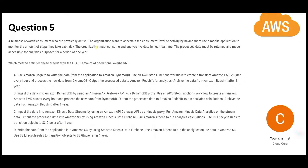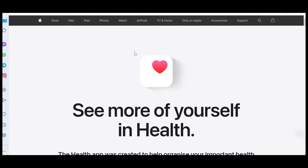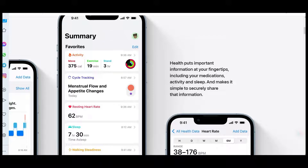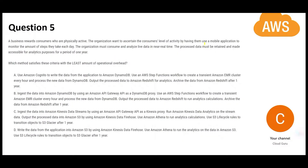Question 5 is about a health app — similar to Apple Health. The app tracks consumer activity; steps are calculated every day. The organization consumes and analyzes live data in near real time — for example, after a 45-minute walk, within about 5–10 minutes it shows distance, elevation, and pace. The processed data must be retained and accessible for one year, likely for ongoing research. The question asks which method has the least operational overhead.